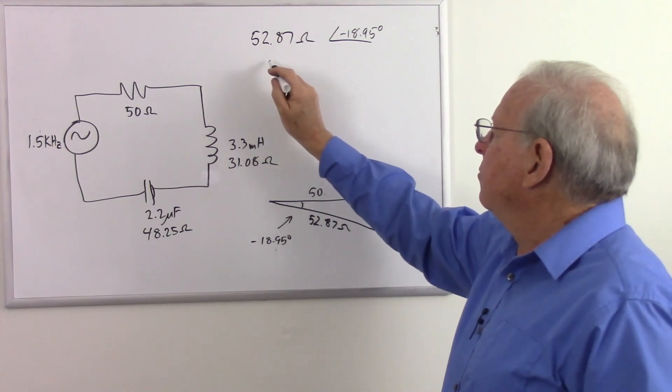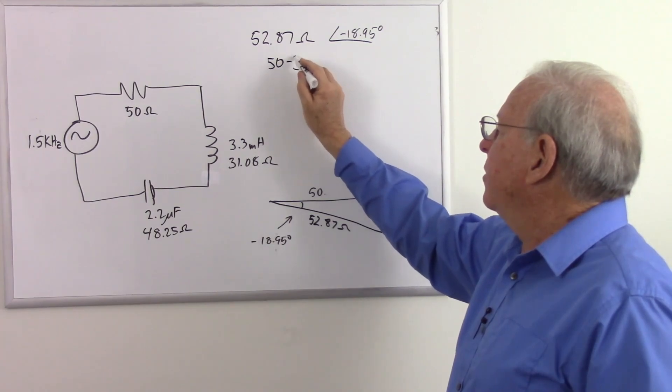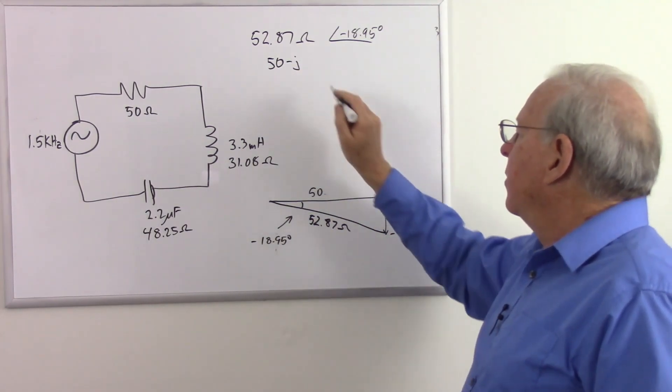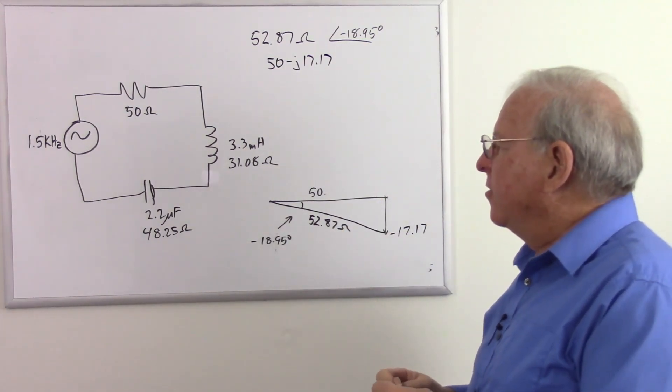In rectangular notation, the resistance, plus or minus j. Minus j because it's capacitive. And that number 17.17. And that is that.